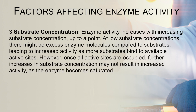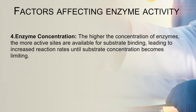The next factor is substrate concentration. Enzyme activity increases with increasing substrate concentration up to a certain point. At low substrate concentration, there might be excess enzyme molecules compared to substrate, leading to increased activity as more substrate binds to available active sites. However, once all the active sites are occupied, further increase in substrate concentration may not result in any further increment — the enzyme becomes saturated. The next factor is enzyme concentration. Higher concentration of enzyme means more active sites available for substrate binding, which leads to increased reaction rate until the substrate concentration becomes limiting.